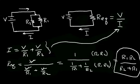So whenever you have resistors in parallel, the equivalent resistor is always smaller than any of the individual resistors in the parallel circuit.